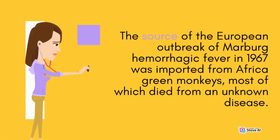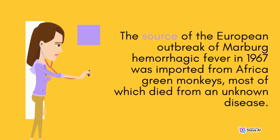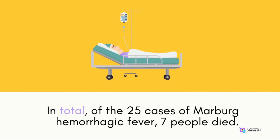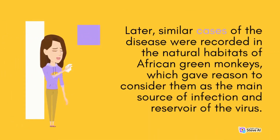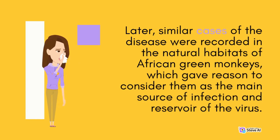The source of the European outbreak of Marburg Hemorrhagic Fever in 1967 was imported African green monkeys, most of which died from an unknown disease. In total, of the 25 cases, seven people died. Similar cases were later recorded in the natural habitats of African green monkeys, which gave reason to consider them as the main source of infection and reservoir of the virus.